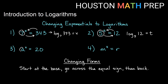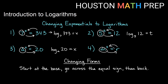Here we have a to the x equals 20. Starting at the base, going across and back: a, then 20, then x. In log form: log base a of 20 equals x. Remember that a is a subscript — this is not a to the 20. a is the base of the log, written below "log", and 20 is inside the operation. It's not an exponent. So log base a of 20 equals x. Next: m to the x equals r. Starting at the base, going across and back, we get: log base m of r equals x.